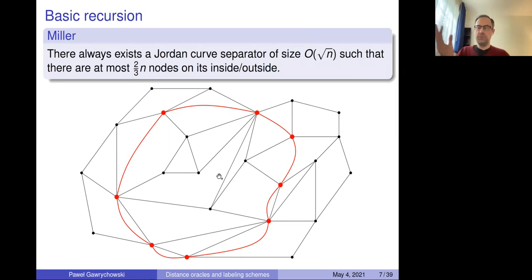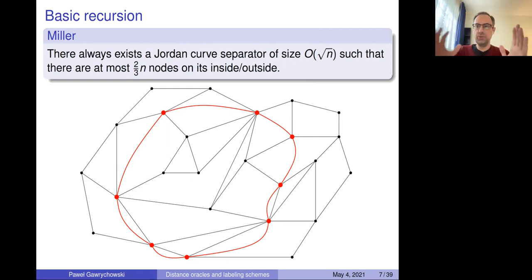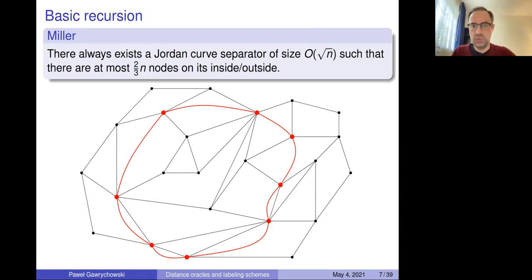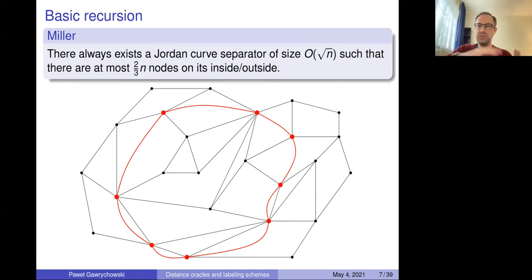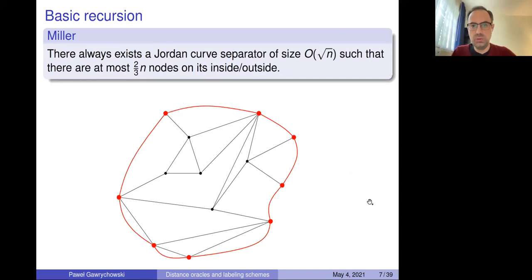It's best to think about the graph being embedded on a sphere, so inside and outside are symmetric. On both sides you have at most two-thirds of n nodes. This allows divide and conquer: find a separator, add something to it, then recurse inside and outside. Many algorithms use this structure, but what you do exactly depends on the specific situation. I'll show what can be done specifically for distance oracles.